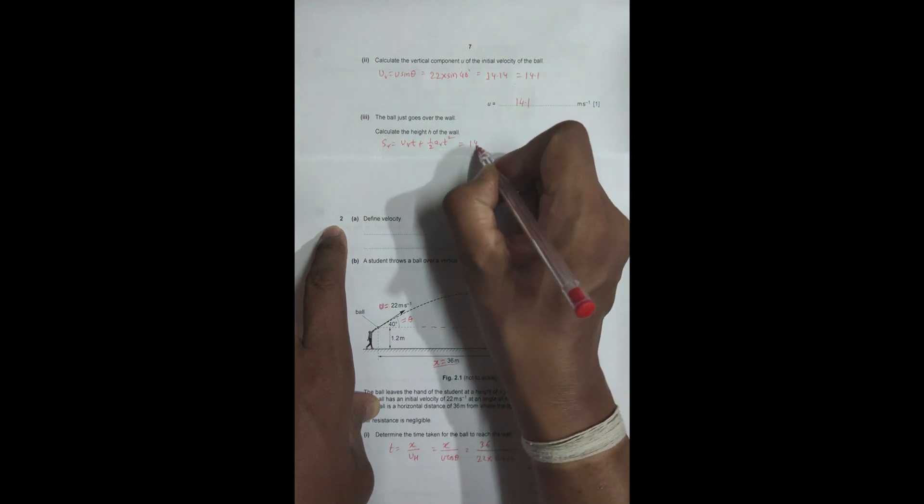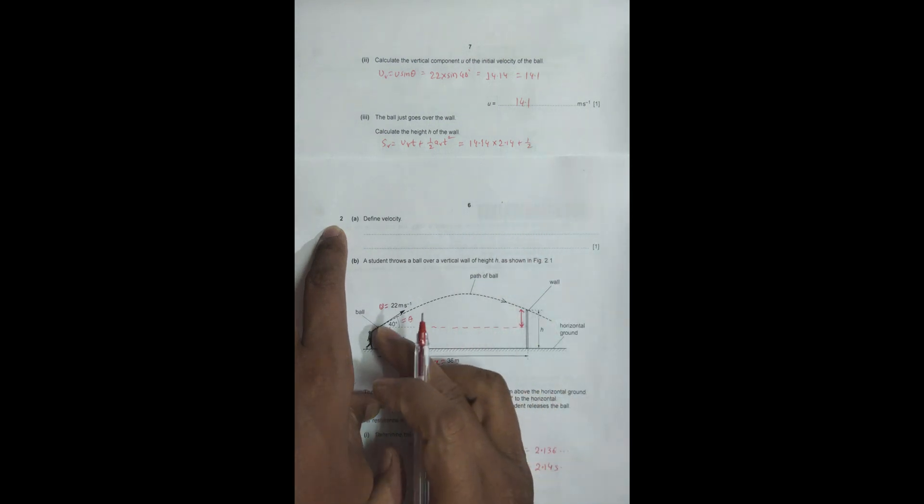The formula for that is s vertical equals u vertical into time plus 1 by 2 a vertical t squared. This will be equal to 14.14 into 2.14 plus 1 by 2. The a_v equals minus g because the vertical velocity decreases, so a_v equals minus 9.81, and t squared is 2.14 squared. This is the formula for the vertical displacement.